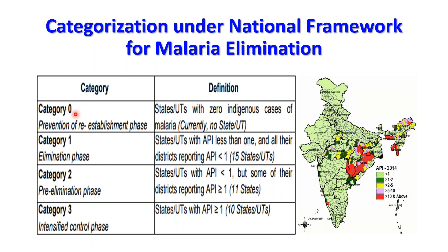Category 0 is the prevention of reestablishment phase for states that have already achieved elimination. Unfortunately, currently no state or union territory is in Category 0, meaning no state has yet achieved the status of malaria elimination.